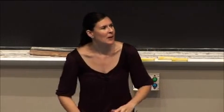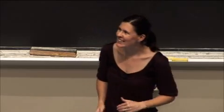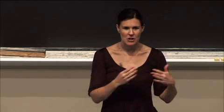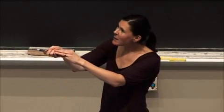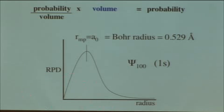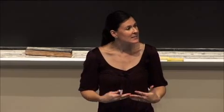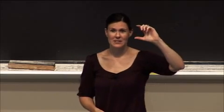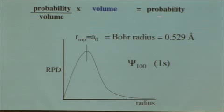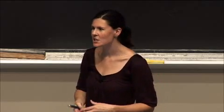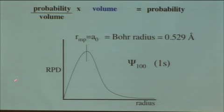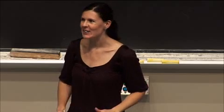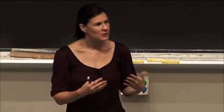I want to stress again — this is something that confuses students when trying to identify nodes — remember that the area at r equals zero is not a node. We will always have r equals zero in these radial probability distribution graphs. At first it might seem counterintuitive because the probability density at the nucleus is greatest, but we need to multiply by volume. When r equals zero, we're multiplying probability density by zero, which is why we have this zero point here — it's not a radial node.